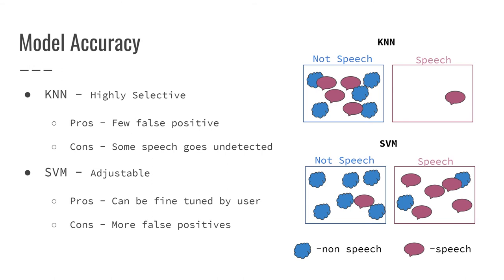Once the models were created and trained, we needed to assess their ability to identify speech within our data set. The KNN model was initially promising — when run on files with little to no speech, it showed very few false positives. However, on files with more speech, it misclassified several segments as non-speech even though speech was present. The SVM, on the other hand, with its variable threshold, allowed us to have more control over which parts of the data were classified in what way. After some experimentation, we decided on a threshold of 99% confidence when deciding that a segment was speech. The SVM model was then able to classify almost all segments containing speech successfully, though it did misclassify some other noises — such as airplanes or construction sounds — as speech on occasion.